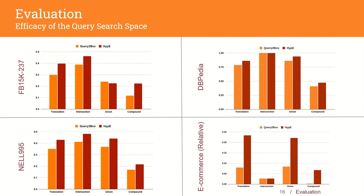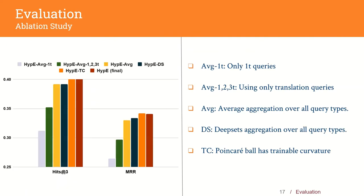In our experiments, we find that hyperboloid embeddings quantitatively show better performance than box embeddings across all query types and datasets, which provides evidence for the potential of hyperbolic space in querying knowledge graphs. To check the improvement from simultaneously learning from different query types, we compare our model against variations trained only on translation queries, and observe that training without complex queries reduces performance in both Hits@3 and MRR. We also check different methods for aggregation and intersection: the proposed model uses attention, but we test deep sets aggregation and vanilla averaging, finding that attention performs best. We also check if trainable curvature for the Poincaré ball aids performance — it does, but the additional parameters do not justify the nominal gain, so we use a fixed curvature at the traditional radius of 1.